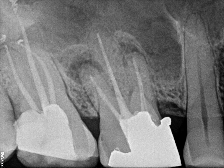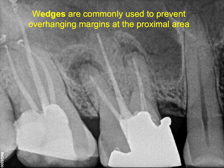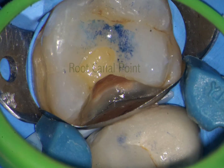Let's start with the purpose of the wedge. The primary purpose of the wedge is to prevent overhang margins at the proximal area. Have a look at this x-ray — you can see an overhang restoration towards the mesial aspect of the first molar. The primary reason for this phenomenon is the improper use of a wedge. The main objective of using a wedge is to create a beautiful adaptation between the matrix band and the cavosurface margin of the gingival seat.